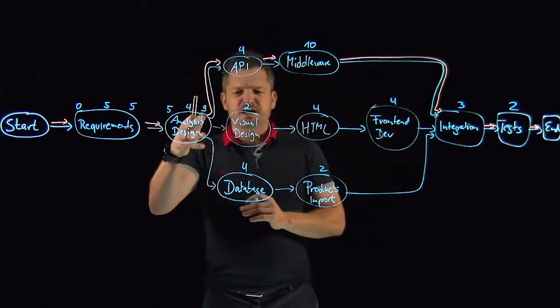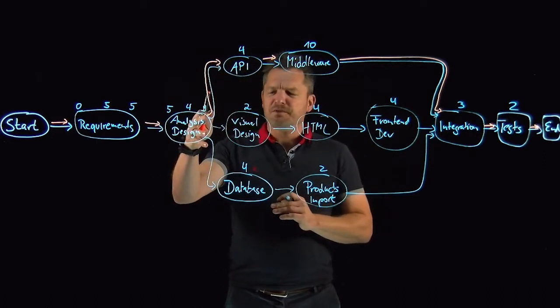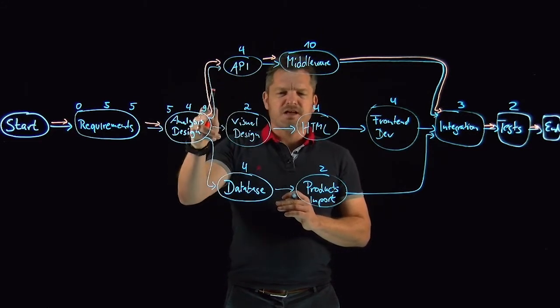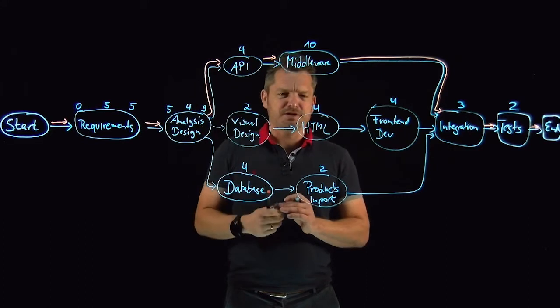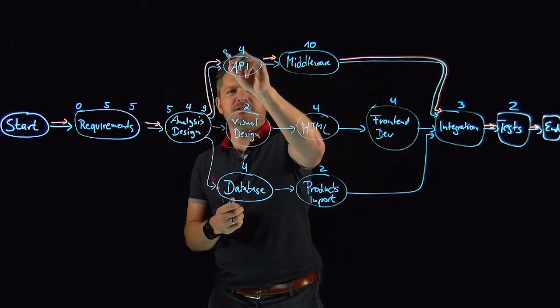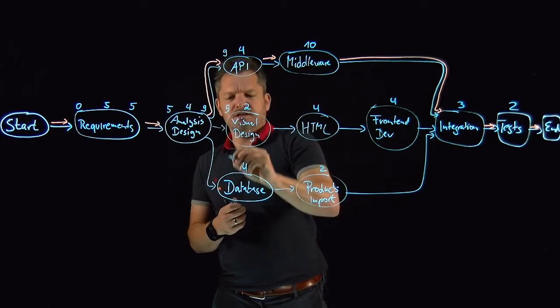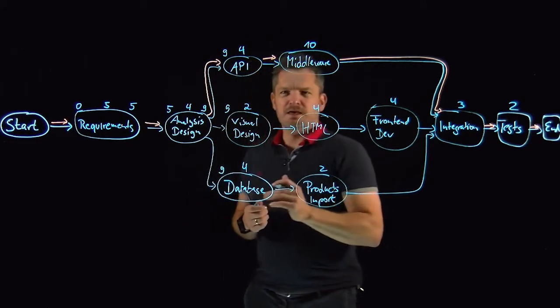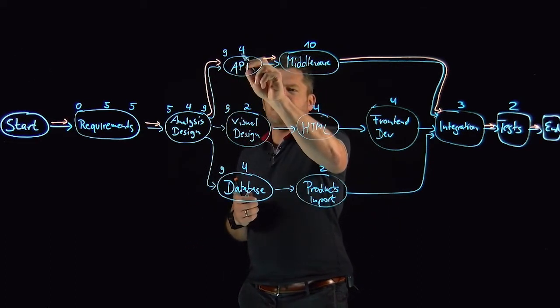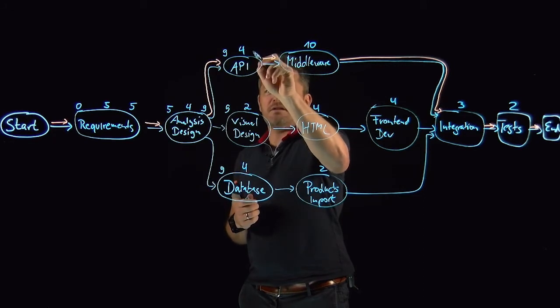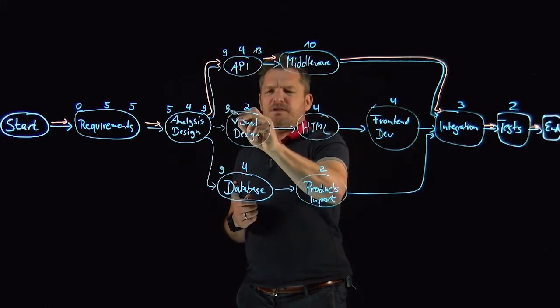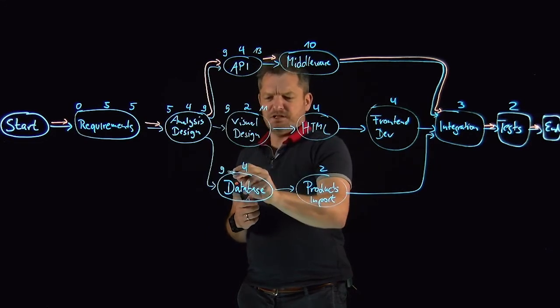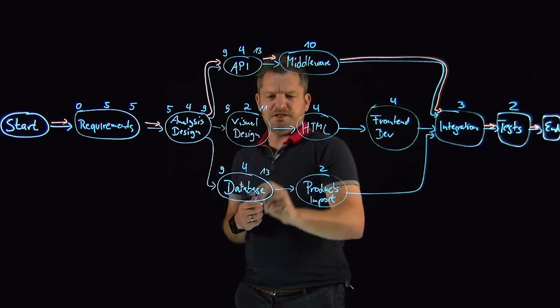And now all the follow-up activities all these three cannot start before day number nine. So we can add nine at early start at all of these tasks for early start. Nine plus four we have thirteen. Nine plus two we have eleven. Nine plus four we have thirteen over here.